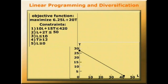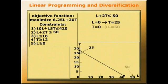Now let's impose the second constraint on top of that diagram. For our second constraint, when L equals 0, T equals 25. When T equals 0, L equals 50. So that gives us our second constraint.